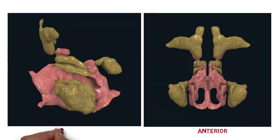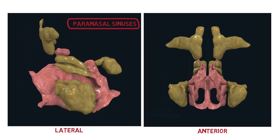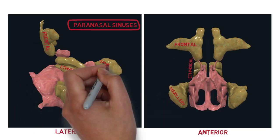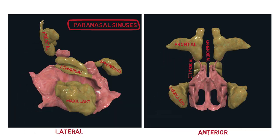Our nasal cavity is also extended into paranasal sinuses, which essentially are air-filled spaces. We have four pairs of them: the frontal, ethmoidal, maxillary and sphenoidal sinuses, each named according to its respective skull bones. Apart from respiration, the respiratory system also helps us with vocalizations, so these paranasal sinuses also serve as the resonant chambers for vocalizations.